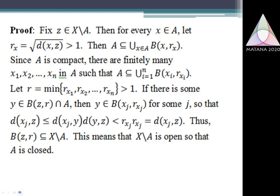I define R as the minimum of R_{x_1}, R_{x_2}, ..., R_{x_n}. Then R is also greater than 1. My claim is that the open ball B(Z, R) does not intersect A. This is established by means of the triangle-type inequality.